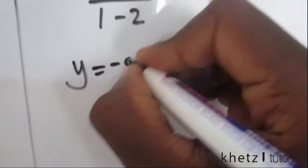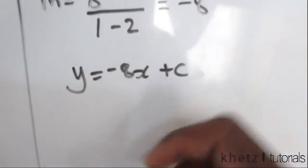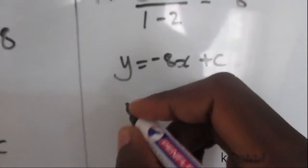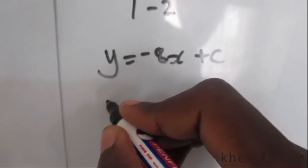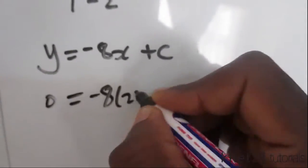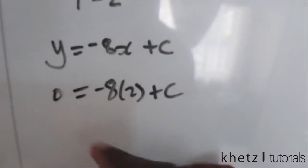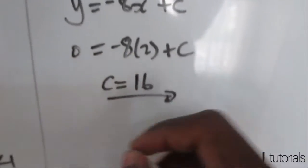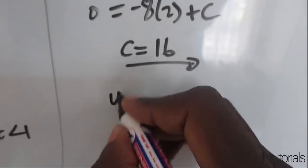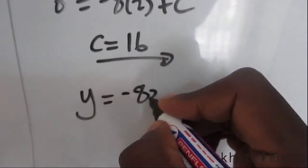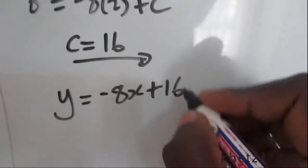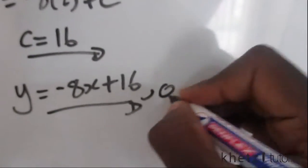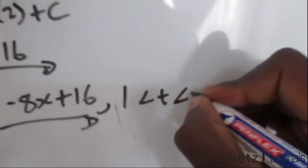Substituting that into our general formula and choosing another point, let's just take 2, 0. You have 0 there, then we have 2 substituted in here. Taking this to the other side of the equal sign is going to give us our C, which is 16. Which means for this section you have y equals negative 8x plus 16, and that is between time 1 and 2.